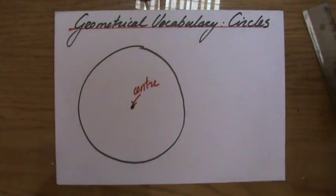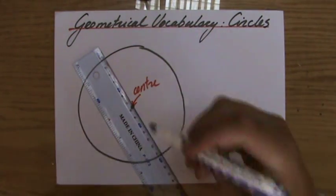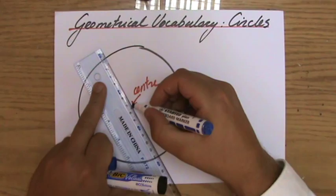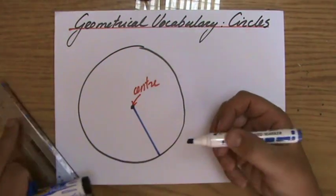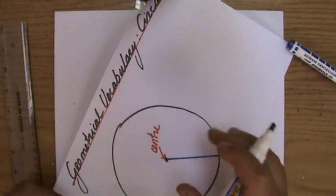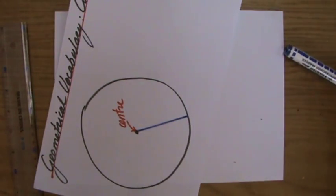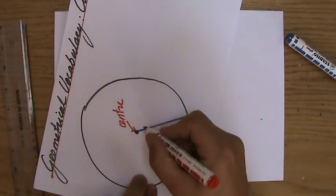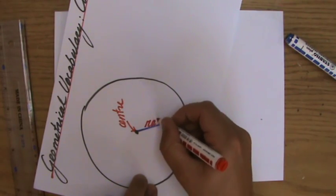And if from the center we draw a line to the circumference of the circle, so for instance that line, then we call that line the radius. So let me just move it a little bit. I have a lot of colors now. That is the radius.